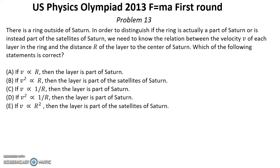Problem number 13. There is a ring outside of Saturn. In order to distinguish if the ring is actually a part of Saturn or is instead part of the satellites of Saturn, we need to know the relation between the velocity v of each layer in the ring and the distance r of the layer to the center of Saturn. Which of the following statements is correct?